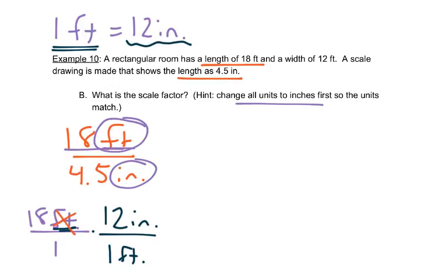We do that because if we have a unit on the top and a unit on the bottom, they cancel out. So now we can multiply these fractions straight across. 18 times 12 is 216, and 1 times 1 is 1. So we have 216 inches.